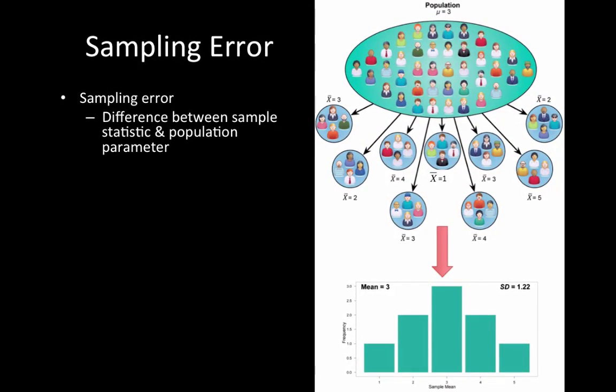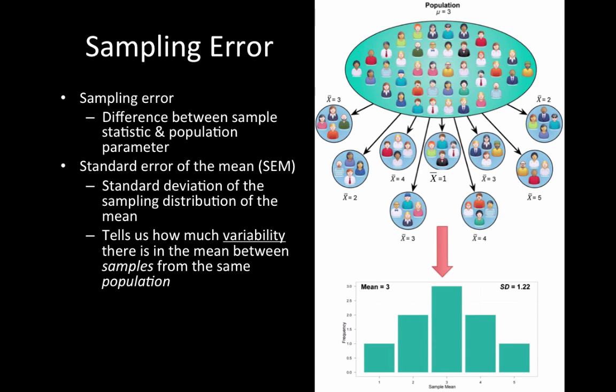This standard deviation is the standard error of the mean—the standard deviation of the sampling distribution of the mean. This bar chart is a sampling distribution of all the different means from all the samples we pulled from the entire population.